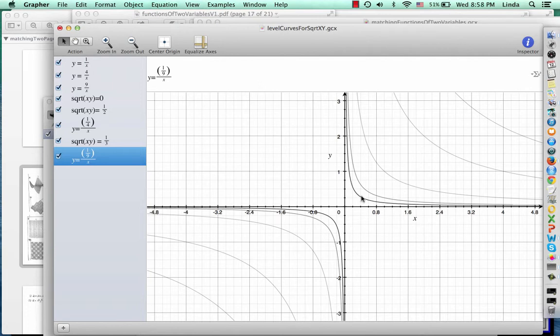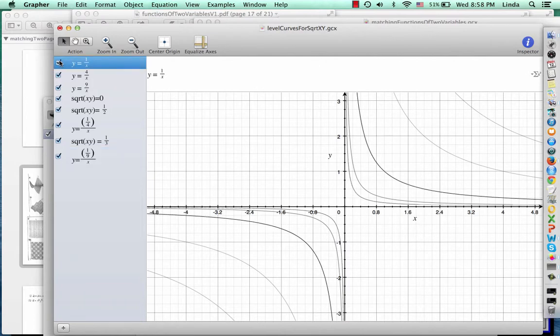So I like to think of this kind of like a topographical map, a hiking map, right? And these level curves give me the height. This one is z equals 1, this one's z equals 2, this one's z equals 3. So as I hike in this direction, my height is increasing. This is also z equals 1.